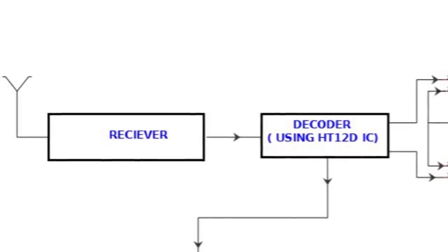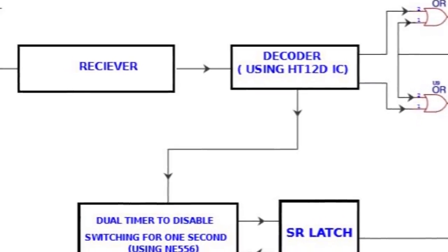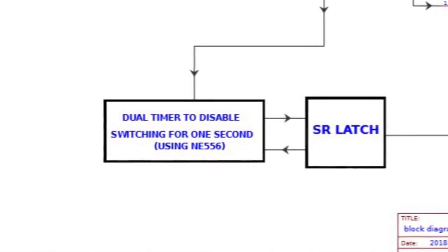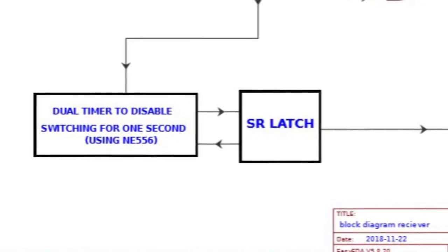The data comes in from the antenna which goes to the receiver and feeds it to the decoder. The decoder sends the data to a dual timer and an SR latch which delays the setting and resetting by half a second.